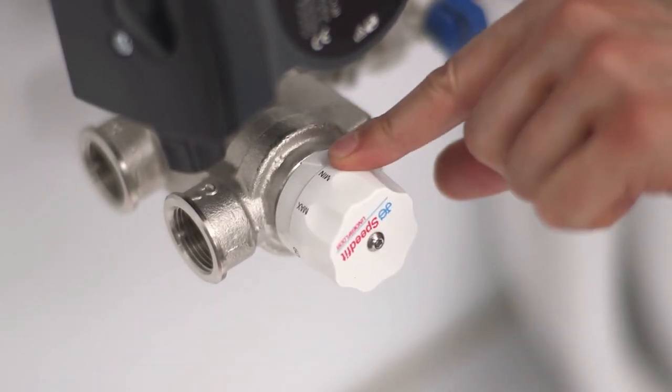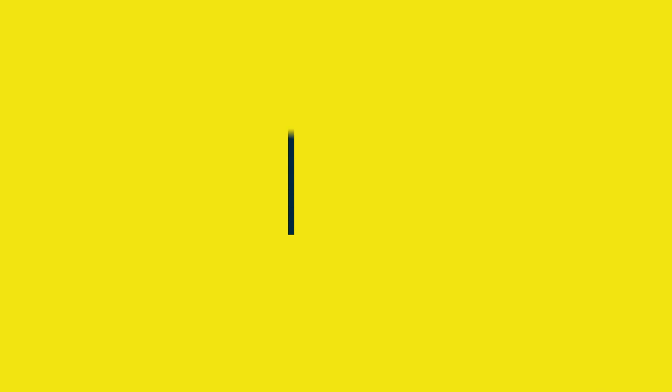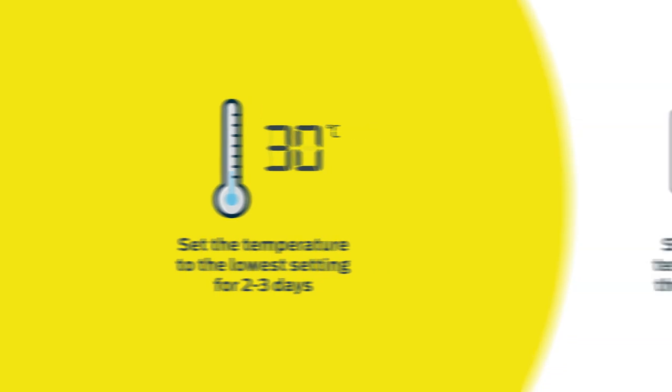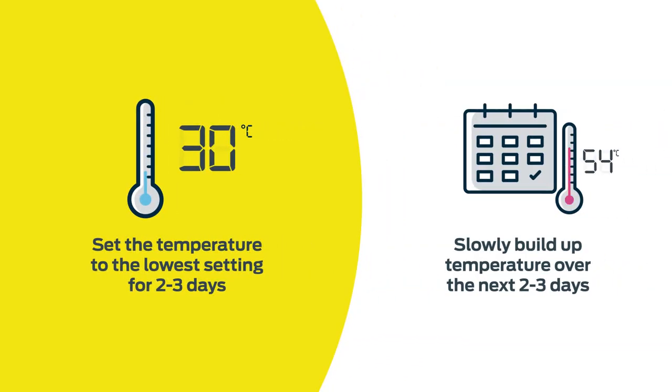When turning on initially, the temperature of the blending valve should be set to the lowest setting, 25-30 degrees, and run for 2-3 days before building up the temperature over the next couple of days.